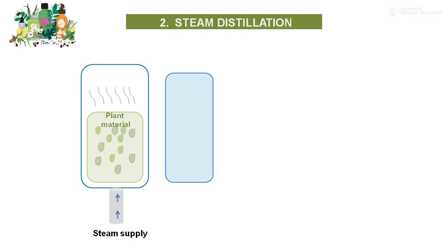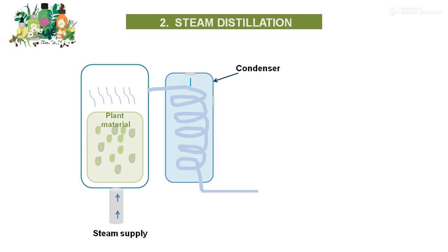Separating volatile from non-volatile organic compounds, both rise with the steam, and the condenser cools the steam, which is transferred back to water. The condenser has two outlets: one for the entry of cold water and another for the exit of hot water. Continuous feeding of cold water and exit of hot water occurs through the condensation technique in the condenser.